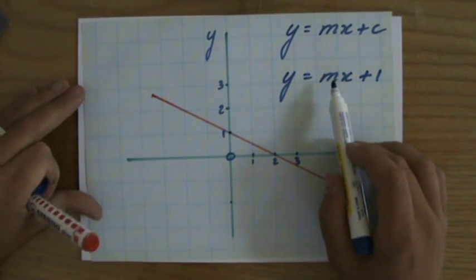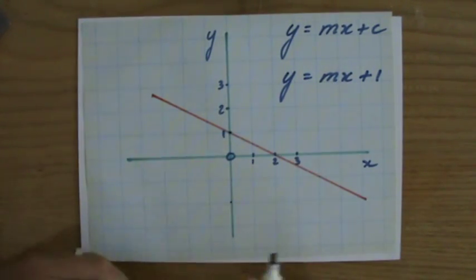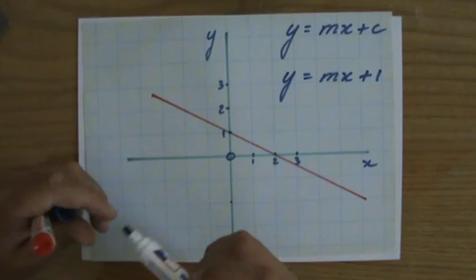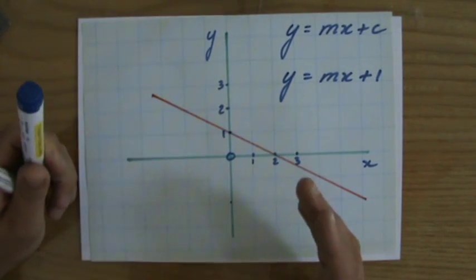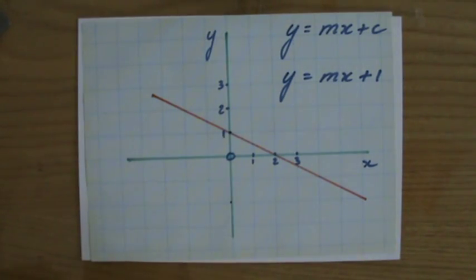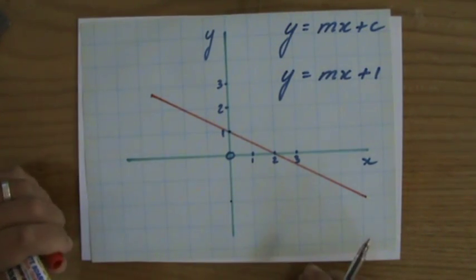All I now have to do is find the gradient m, where the gradient of the line is: if I go one step to the right, how many steps do I go up? And again, have a look at one of my previous videos if you're not sure what the gradient is.